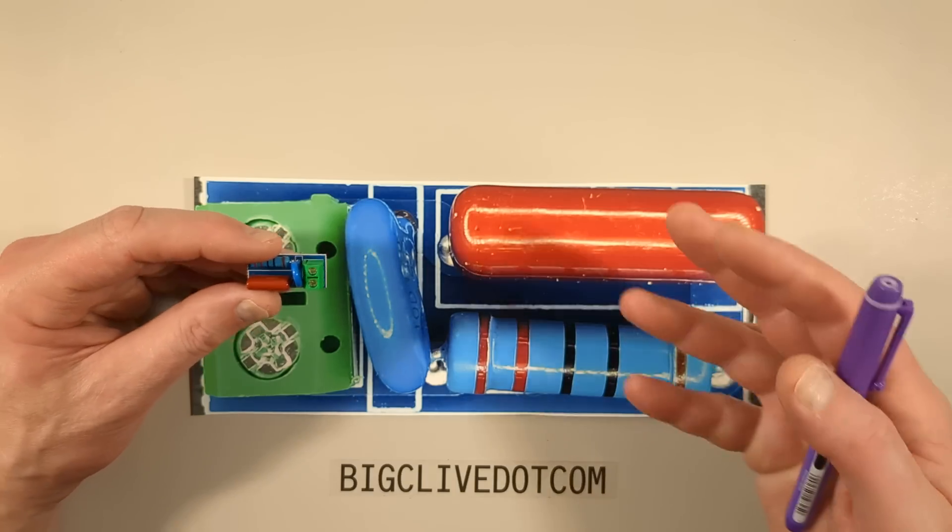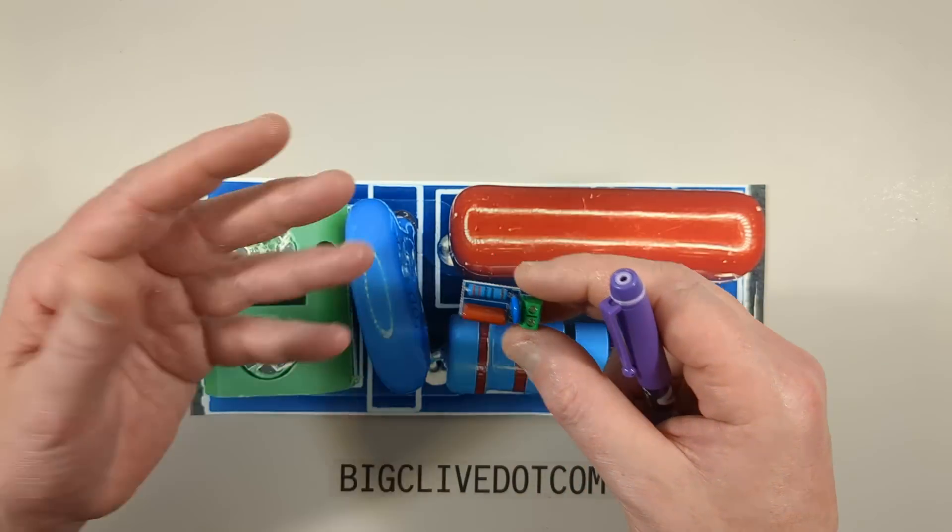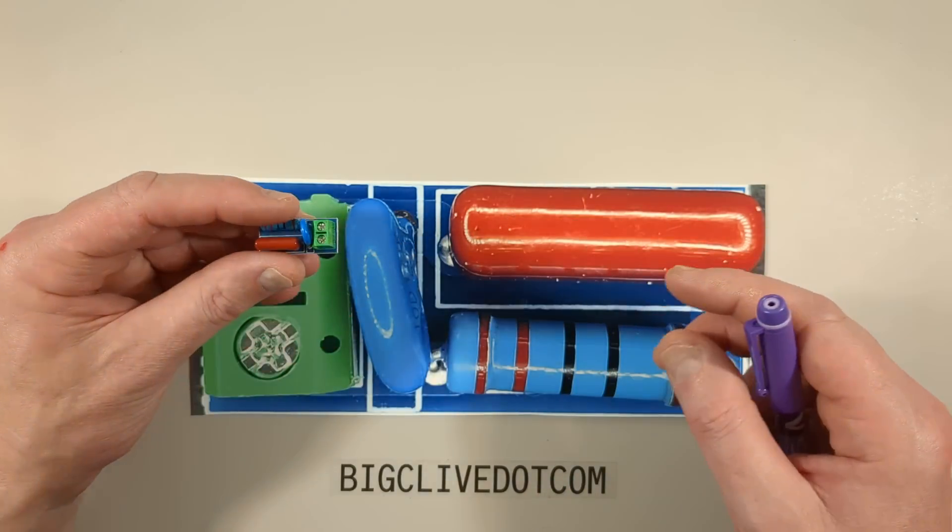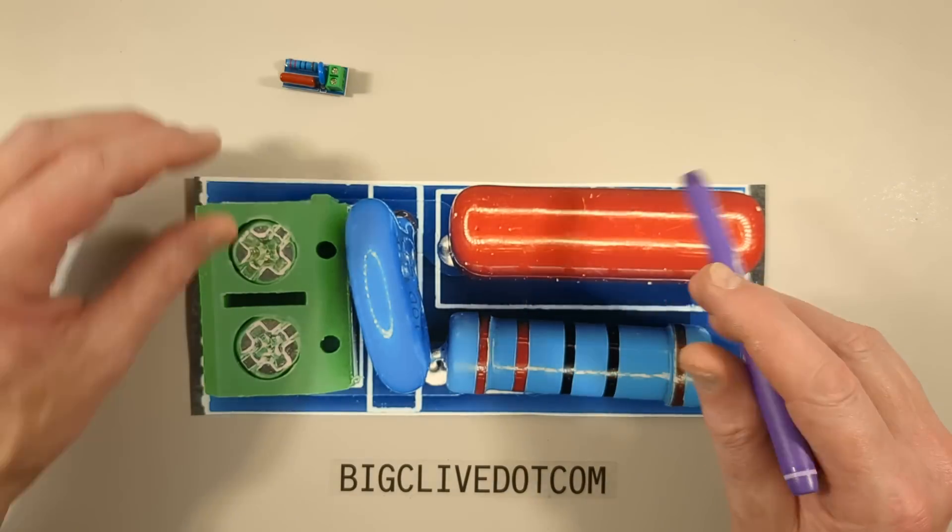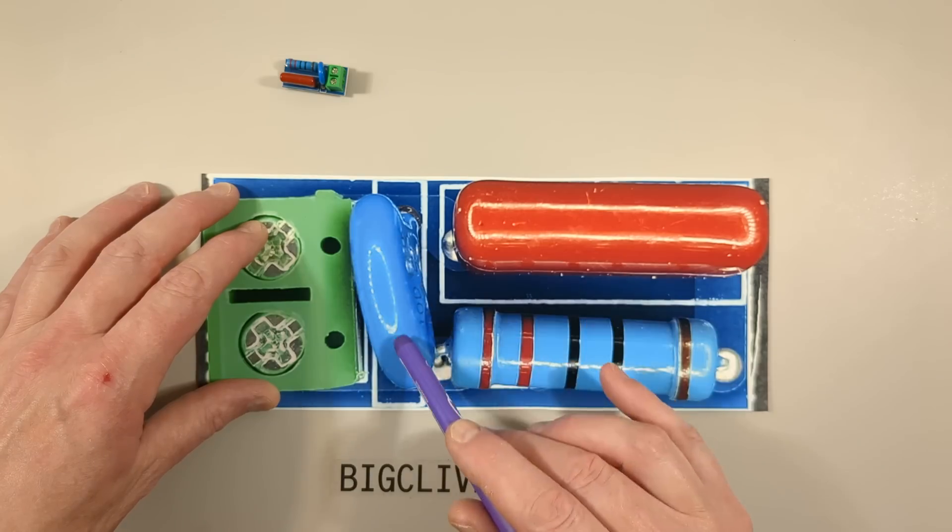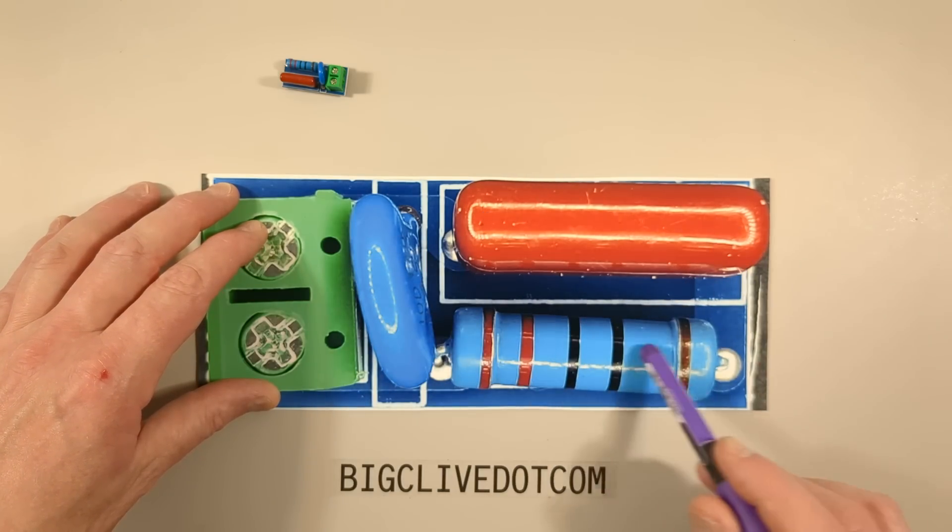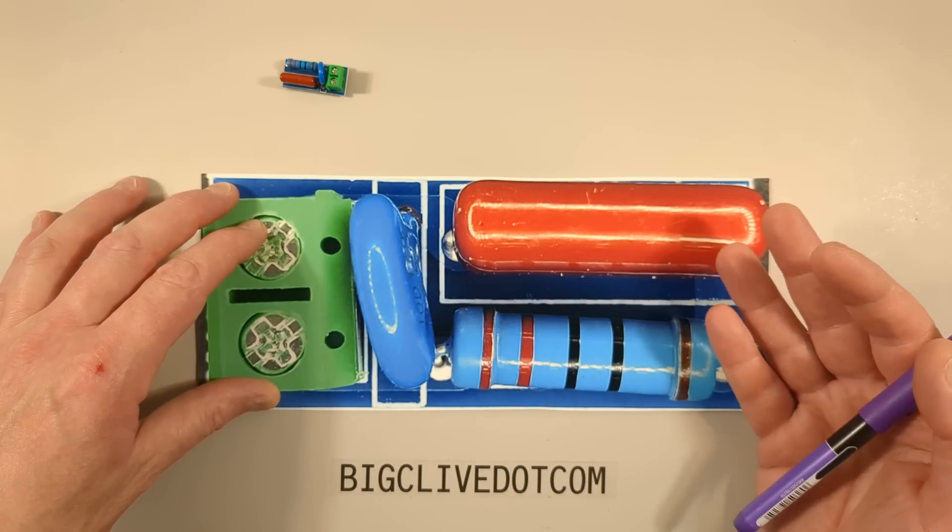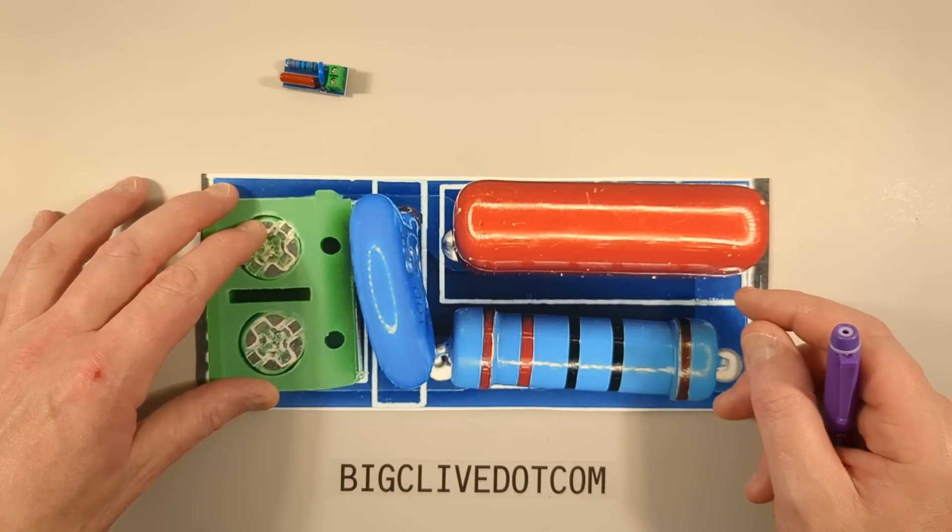Let's talk about snubber networks. I recently bought a pack of them from AliExpress. What is particularly interesting about this module is that it has a metal oxide varistor alongside the usual capacitor and resistor, and these are used to protect contacts and make life easier for things like triacs.